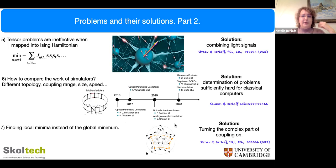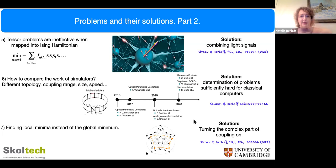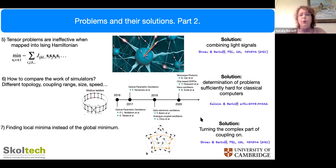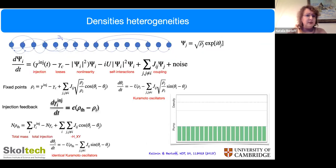Another important question I want to spend more time on today: how do we compare the work of simulators? There are many machines using this principle of finding the minimum of a spin Hamiltonian — optoelectronic oscillators, coherent Ising machines in different implementations, microwave photonics, nanolasers, microcavities — with different topology, coupling range, size, and speed. How do we decide that a machine is actually doing something useful? Also, these systems often find local rather than global minima, and we have proposed ways to drive the system to the true ground state.